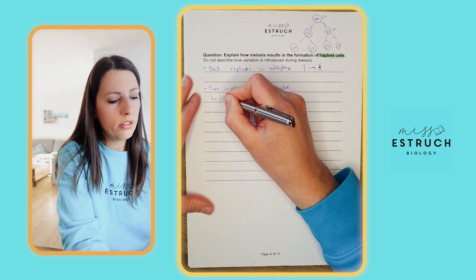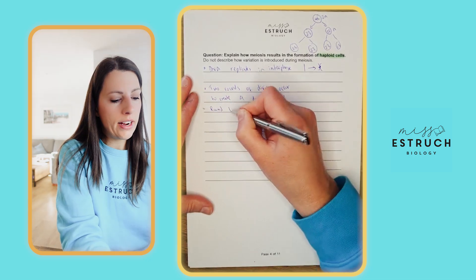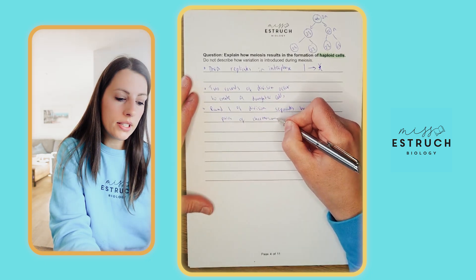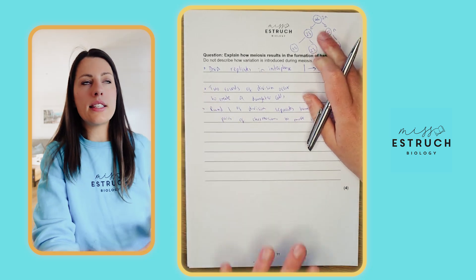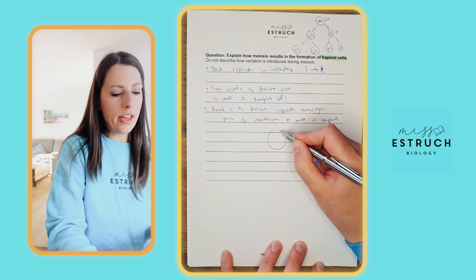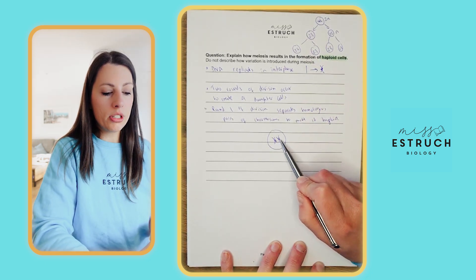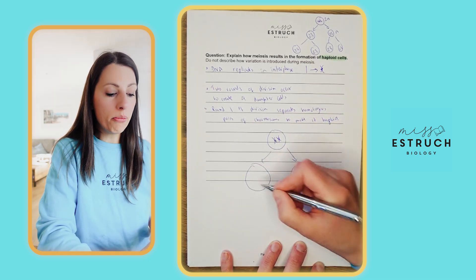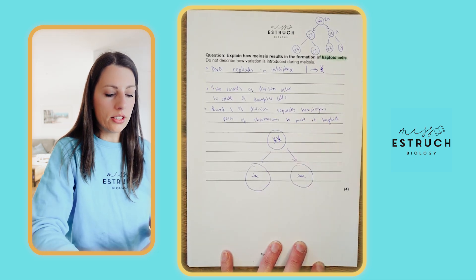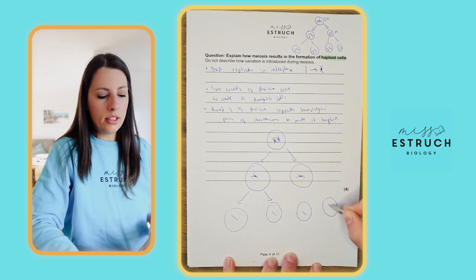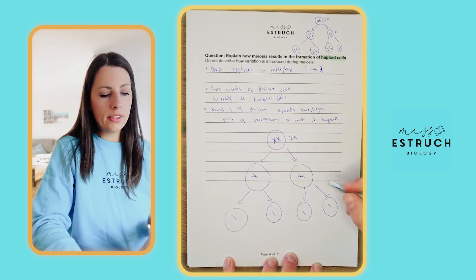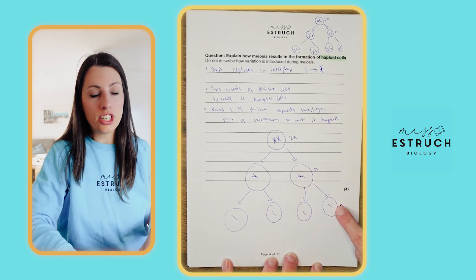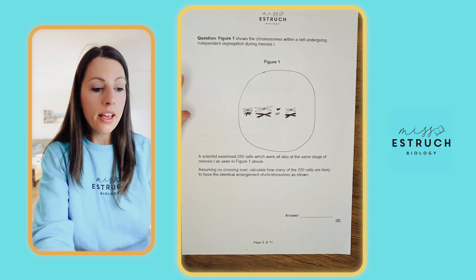There are two rounds of division creating four daughter cells. Round one separates homologous pairs of chromosomes to make the cell haploid. Starting with 46 chromosomes with homologous pairs and two sister chromatids each: after the first round we lose the homologous pairs but sister chromatids remain joined. After the second round we still have the haploid number — here as two sister chromatids joined at the centromere, then as single chromosome structures.